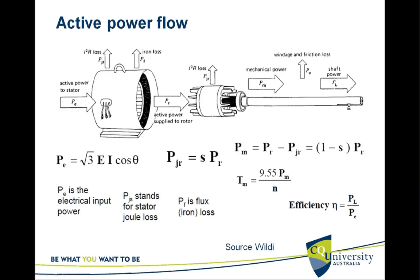Looking at the equations: the electrical input power Pe = √3 × E × I × cos θ. PJS stands for stator joule loss — that is the stator power loss. PF is the flux or iron loss.